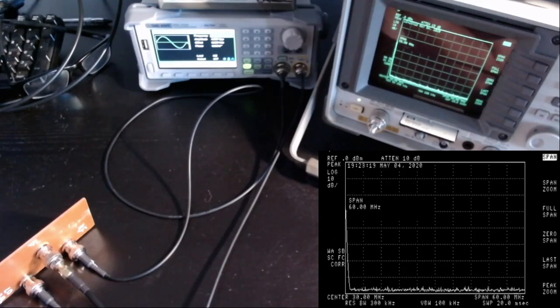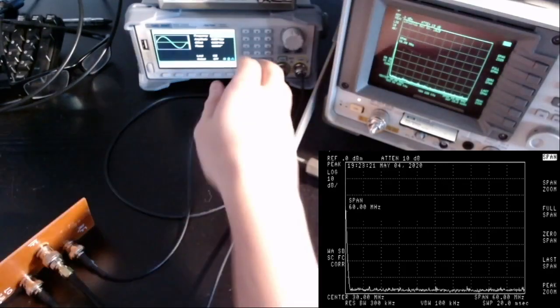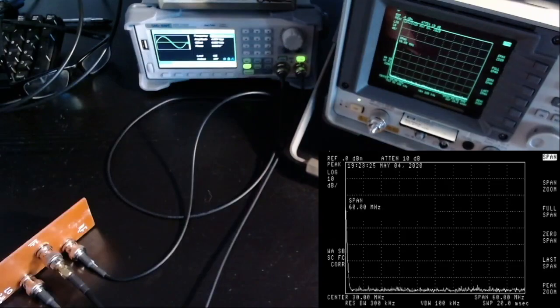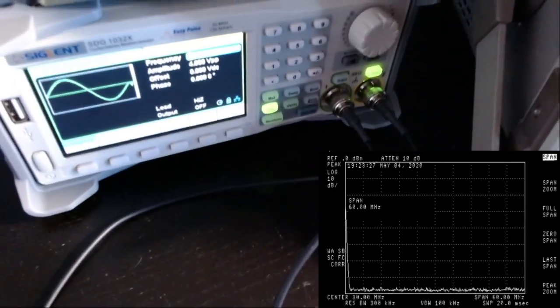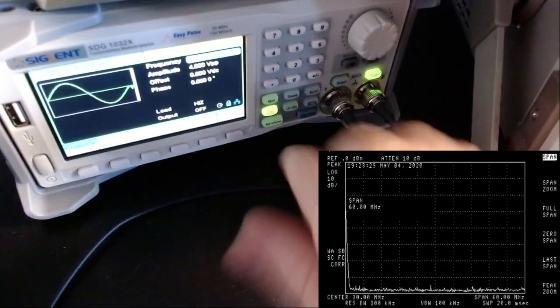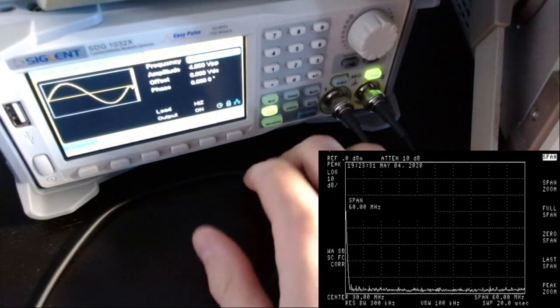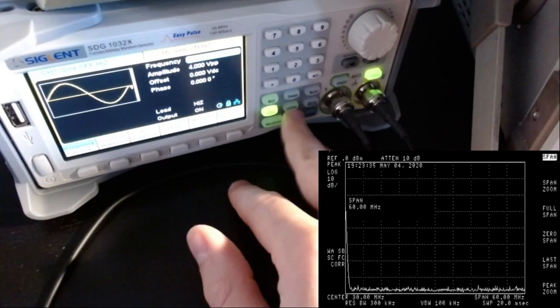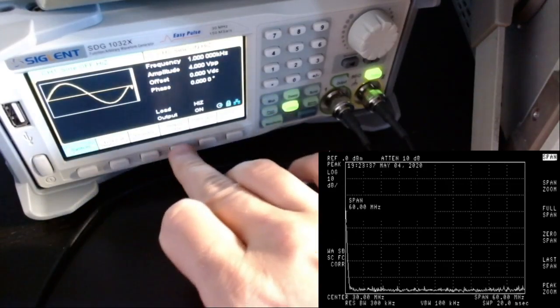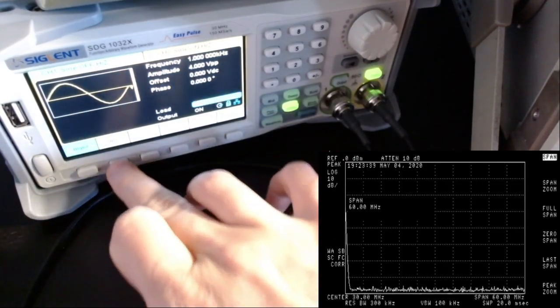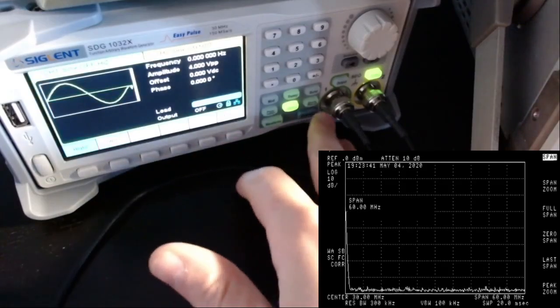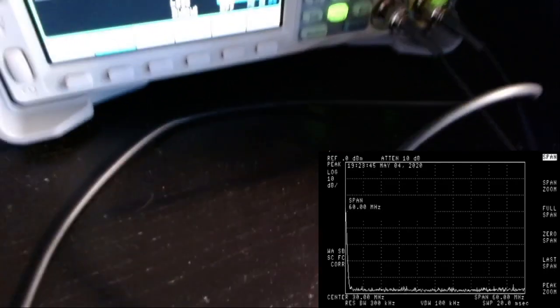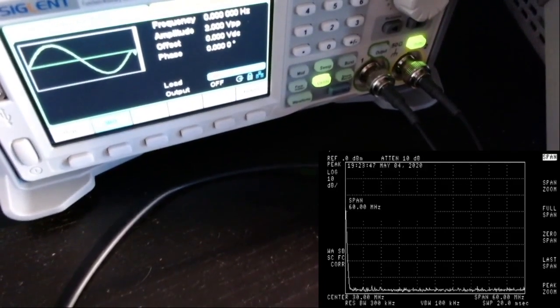Let me zoom in on this Siglent device. I'm now in channel 2 and I'm going to set first of all a 50 ohm load, and the same for channel 1.